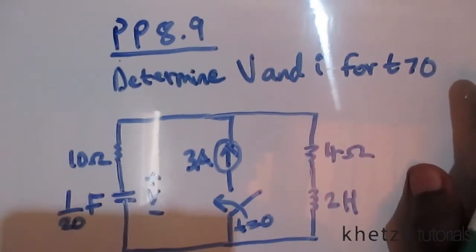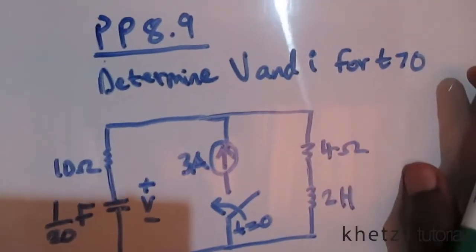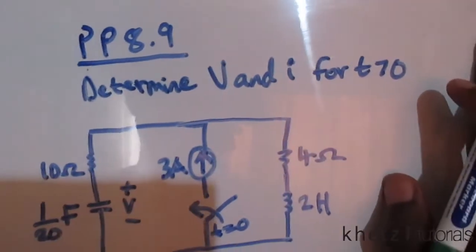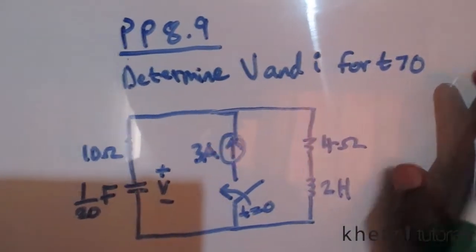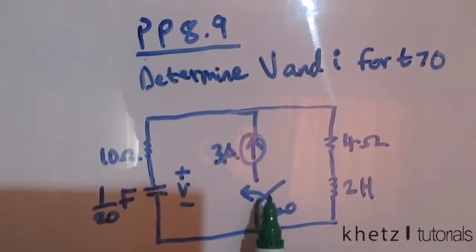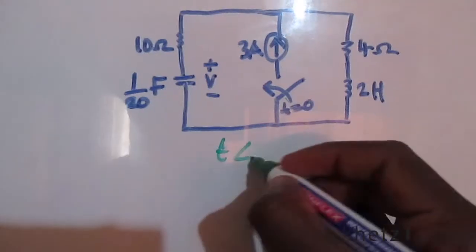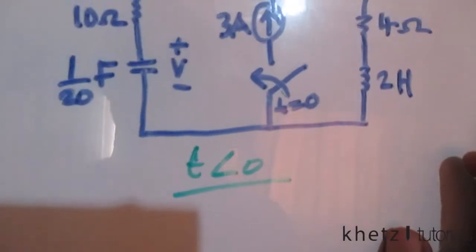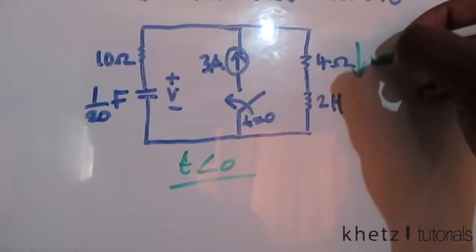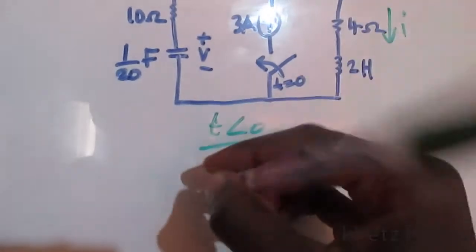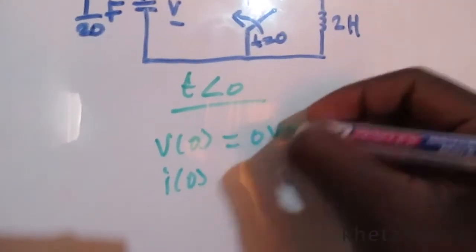Welcome to CAT Tutorials. In this video I'll be covering practice problem 8.9. We have a switch with a switching action at t=0. Before t=0 there is no excitation in the circuit, and therefore we can conclude that v(0) and i(0) are both zero.